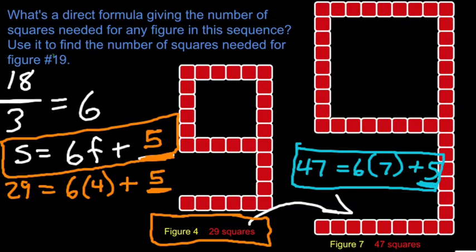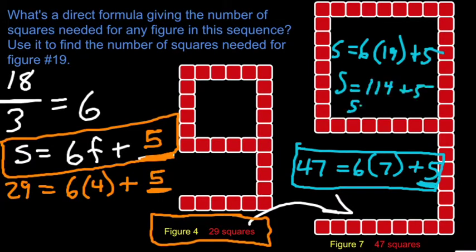Use it. Use the formula to find the number of squares needed for figure number 19. So now that I have my formula boxed in orange, I can just go squares equals 6 times figure 19 plus 5 and do the mathematics. 119 squares in figure number 19.